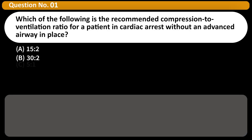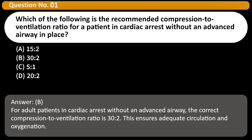Which of the following is the recommended compression-to-ventilation ratio for a patient in cardiac arrest without an advanced airway in place? A. 15:2. B. 30:2. C. 5:1. D. 20:2. Answer: B. For adult patients in cardiac arrest without an advanced airway, the correct compression-to-ventilation ratio is 30 to 2. This ensures adequate circulation and oxygenation.